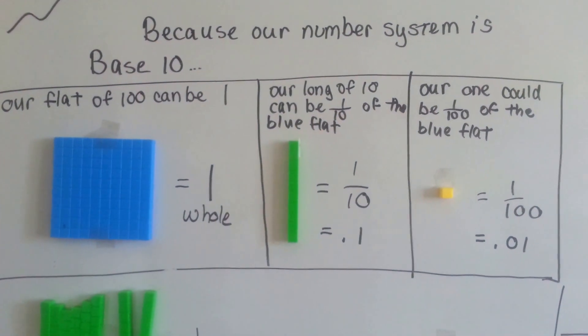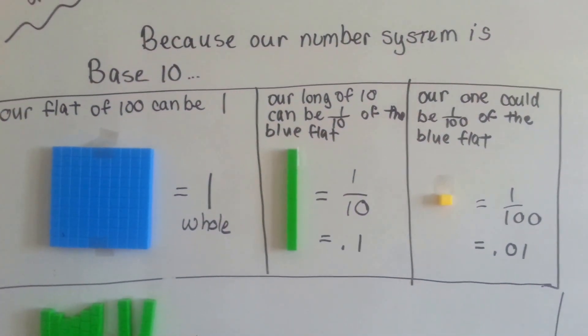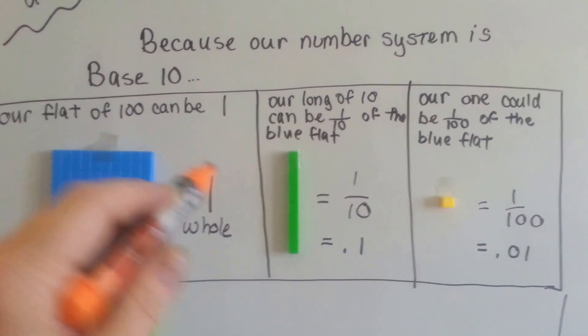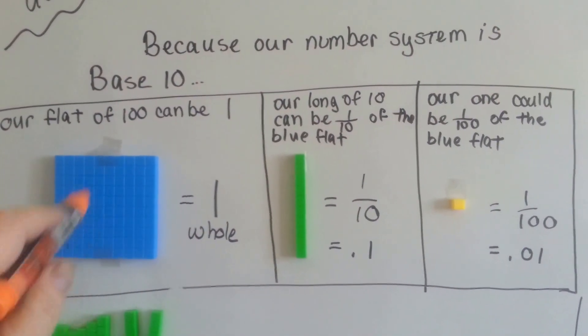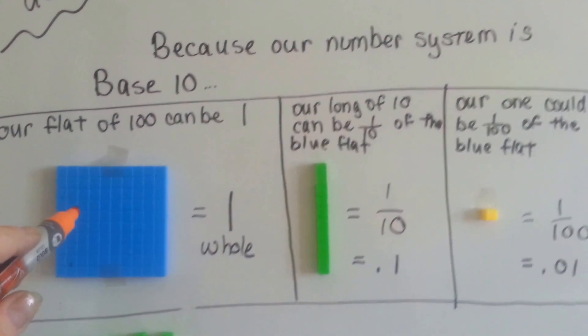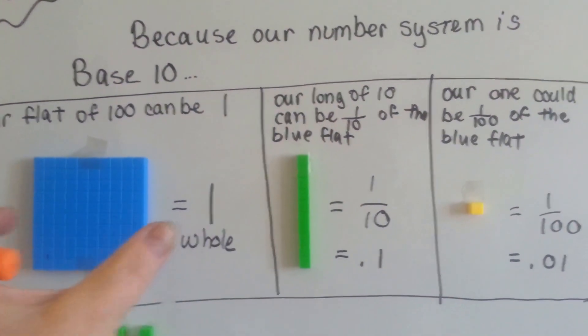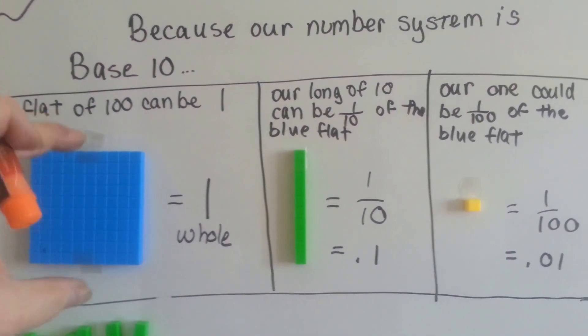Because our base 10 system is base 10, everything is based on tens. So we can use our flat of 100 that we were using to add whole numbers, we can use it to represent one whole, as if that was just one.